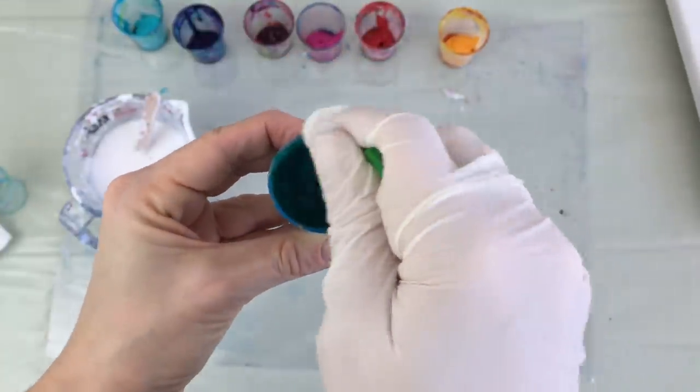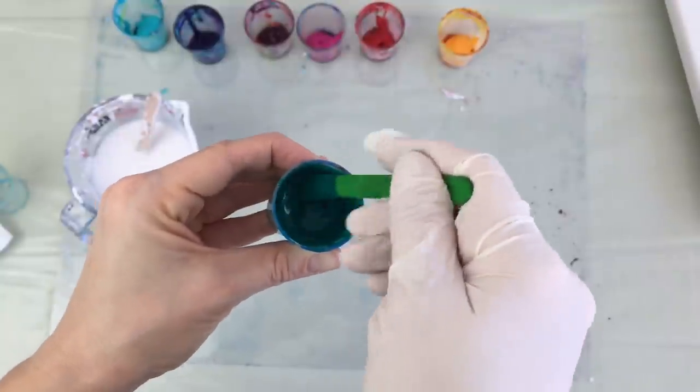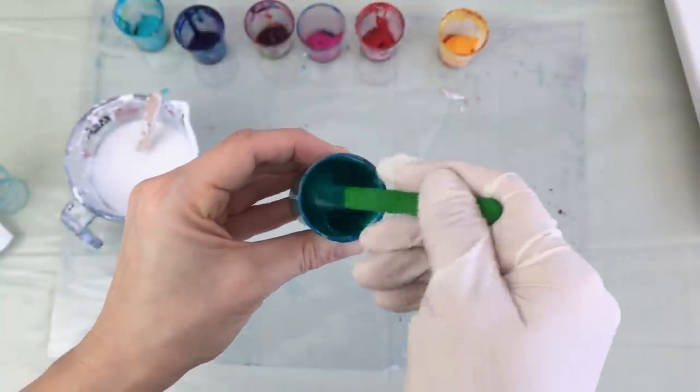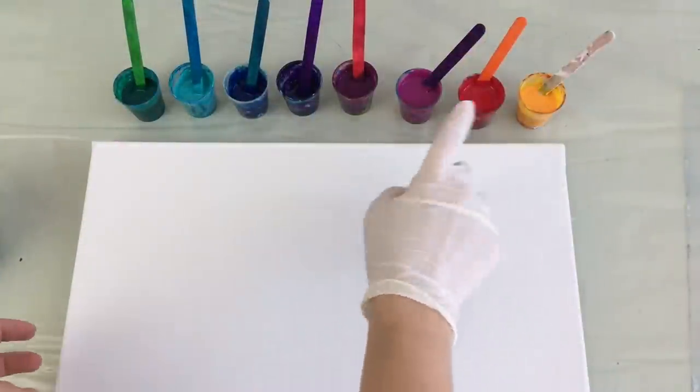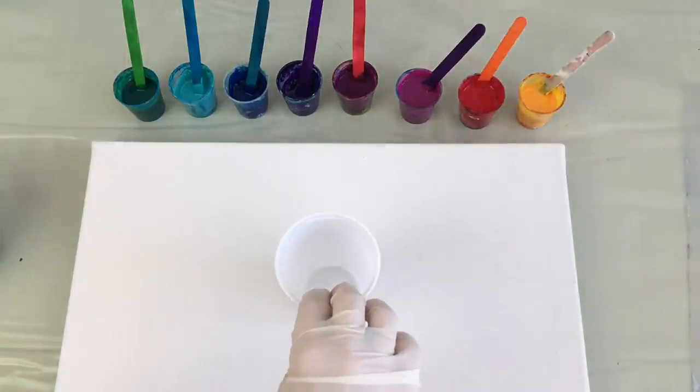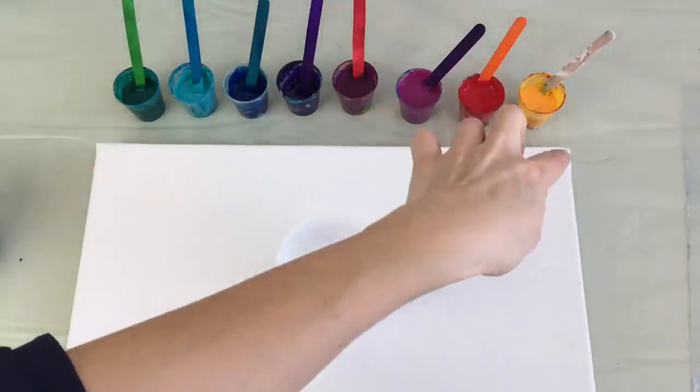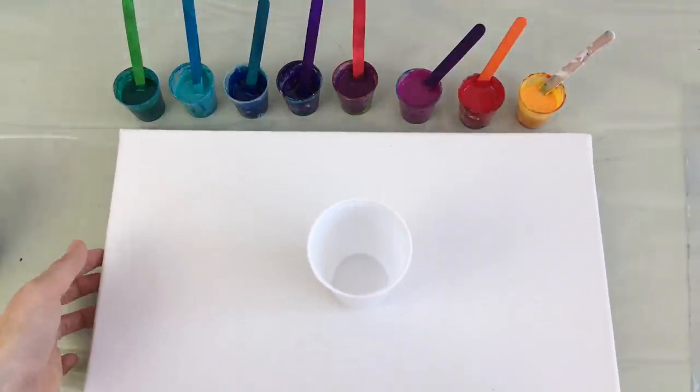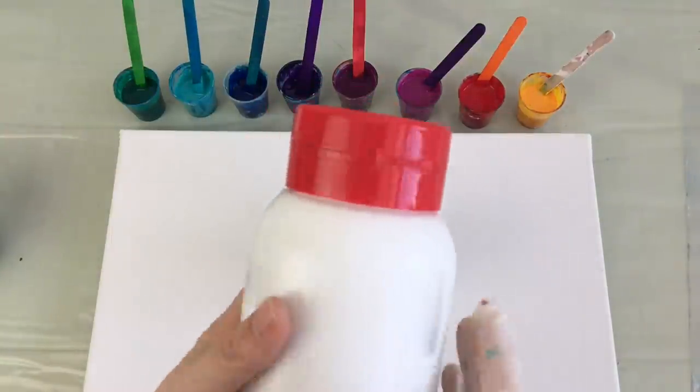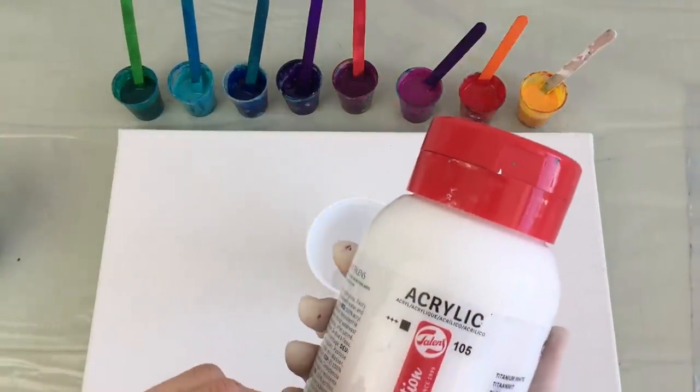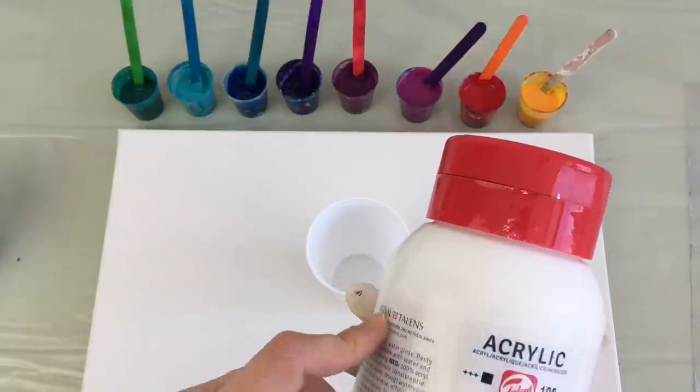This will be the basic mixture for my pour. So all of my colors are mixed now and I'm going to mix my white, because white will be the base for my canvas which is size 20 times 30 centimeters. At the moment I'm using this white which I bought in local art shop. I don't know which brand it is - maybe Royal Talents, if that's the brand.